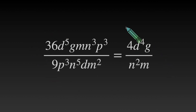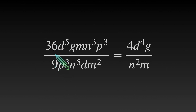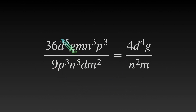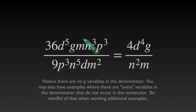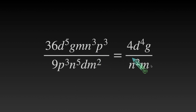Here's one more additional example. 36 over 9 — we can divide both by 9. 36 divided by 9 is 4, and 9 divided by 9 is an understood 1, so no need to write that down. Let's look at our d's: d to the 5th and d to the first. 5 minus 1 gives us d to the 4th in our numerator since we had more d's at the top. For g — we don't have any g's at the bottom, so we still need a g in our answer. Now m to the first and m squared: 2 minus 1, we have m to the first at the bottom since there were more m's at the bottom.